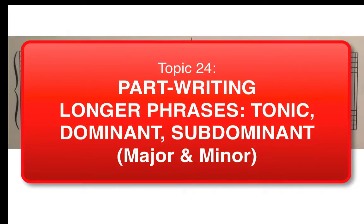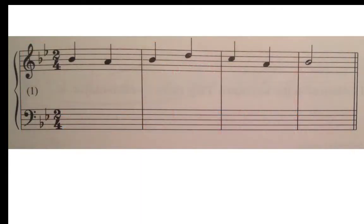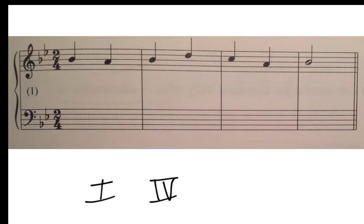In this video we're going to work through assignment 611 number 1. The idea is that we're stringing together more and more chords, but yet we're still using the same three — sometimes called primary chords — the tonic, the subdominant, and the dominant in both major and minor keys.